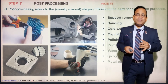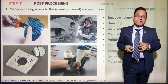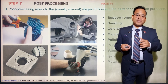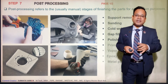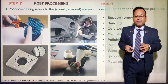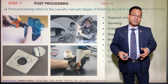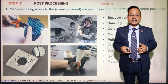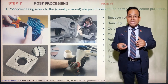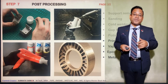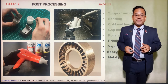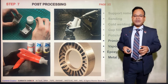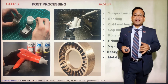Step seven is post-processing. After removal of the component, post-processing steps include support removal, sanding, and cold welding — since larger components are sometimes made in smaller parts and then joined. Other steps may include gap filling, polishing, primer and finish painting, vapor smoothening, epoxy coating, or metal coating, which is mostly applied to non-metallic materials.